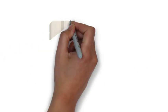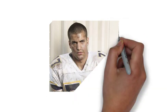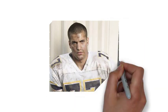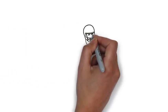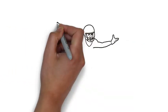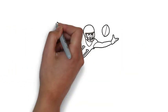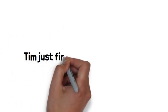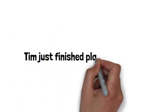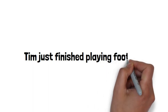For example, if your friend Tim came to your house wearing a dirty and sweat-stained football uniform, and you knew he was a member of the high school football team, then on the basis of evidence and reasoning, you could infer that Tim just finished playing football, and you would probably be right.